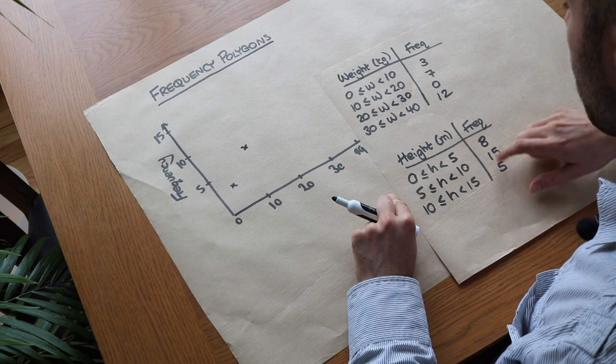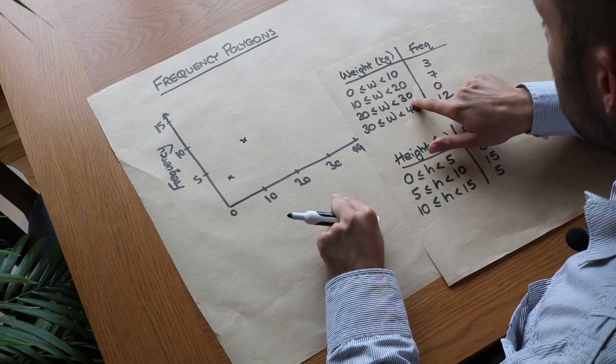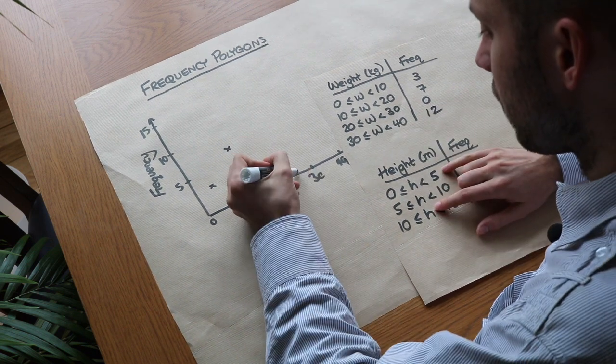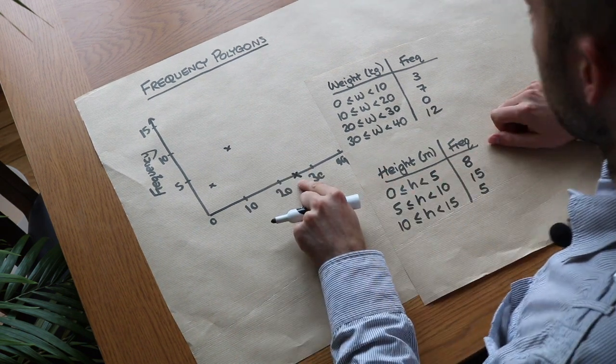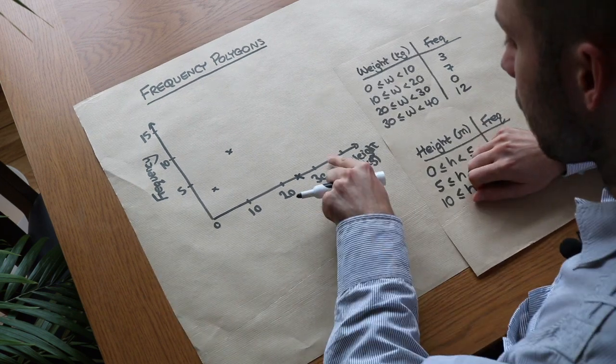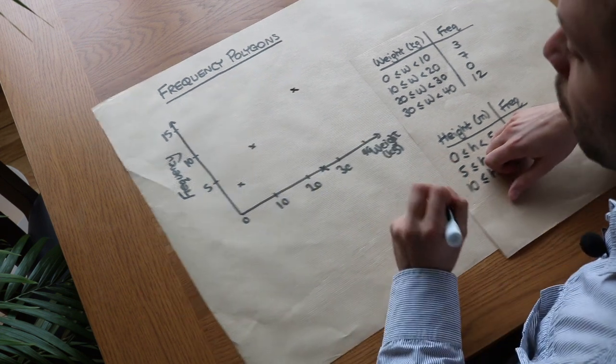Now we've got 0 people with a weight between 20 and 30, so we therefore use 25 with 0. And don't forget to include that point even though the frequency is 0. And finally we use 35 with 12. We plot that—35, 12—it's going to be somewhere up here.